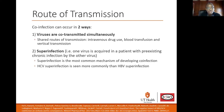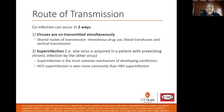Co-infection can occur in two ways. First, the viruses are co-transmitted at the same time. Both viruses have the same routes of transmission, such as intravenous drug use, blood transfusion, and vertical transmission, so a person could, in theory, get both viruses at the same time. The other route is superinfection, where they already have one virus and then acquire the other virus later down the road.